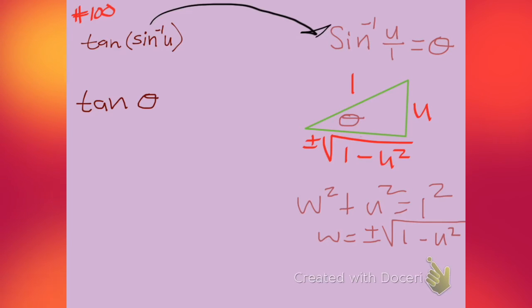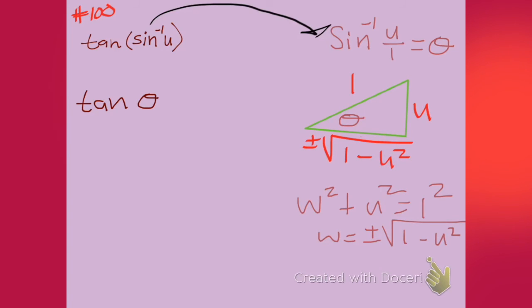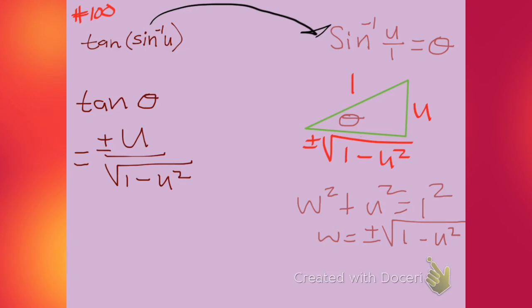So we're trying to find the tangent of theta, but we have our triangle. And our tangent is our opposite divided by our adjacent. So I'm going to write my opposite over my adjacent. And I'm going to put the plus and minus. I'm going to determine where that is, depending on what the inverse sine of u is.